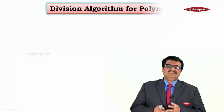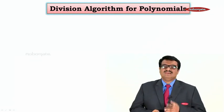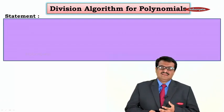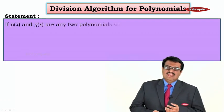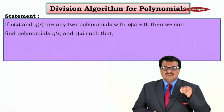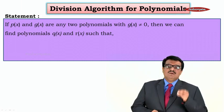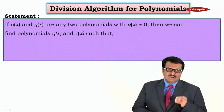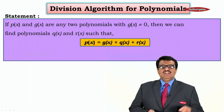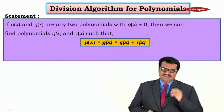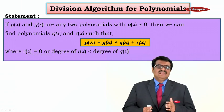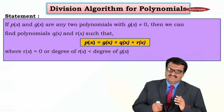We will learn the division algorithm for polynomials. Let us understand the textbook definition first. The statement is: if P(x) and G(x) are any two polynomials with G(x) not equal to 0, then we can find polynomials Q(x) and R(x) such that P(x) = G(x) × Q(x) + R(x), where R(x) = 0 or the degree of R(x) is less than the degree of G(x).